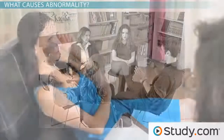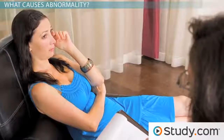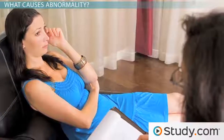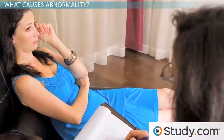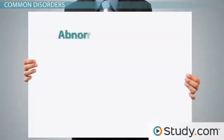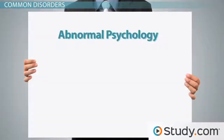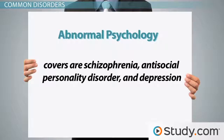Of course, most psychologists don't believe in one theory or the other. Most psychologists believe in one theory more than the other, but will admit that they both play a role in abnormality. As we said before, abnormal psychology deals with all sorts of abnormality. Three common disorders that abnormal psychology covers are schizophrenia, antisocial personality disorder, and depression.